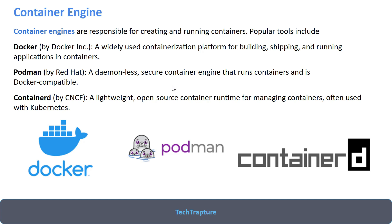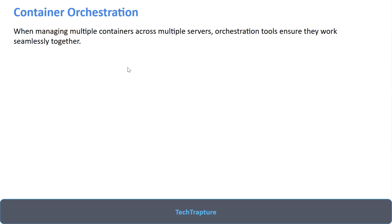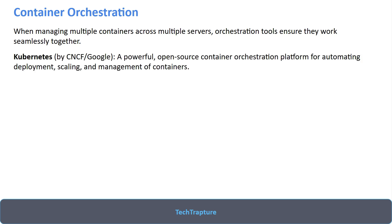Docker is the most commonly encountered container engine, but you might also work with Podman or containerd. Now let's talk about container orchestration. When managing multiple containers across multiple services, orchestration tools ensure they work seamlessly together. Suppose you have a microservices-based application with 20 or 25 services — each service has its own container image. Managing all these different container images on a server requires a container orchestration tool.